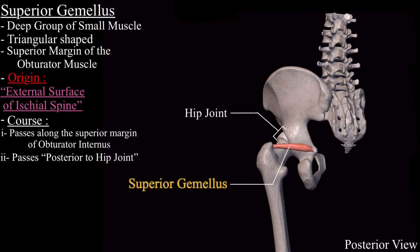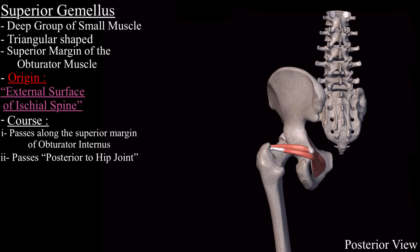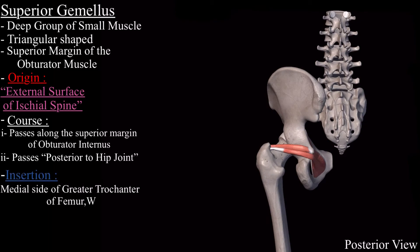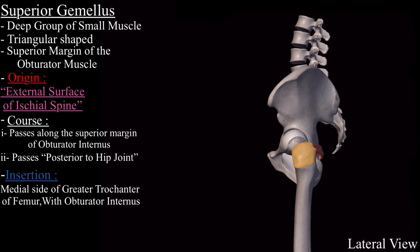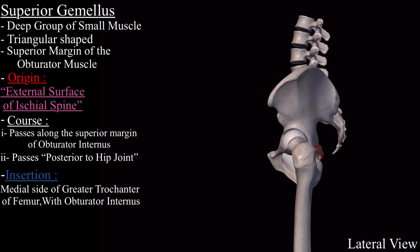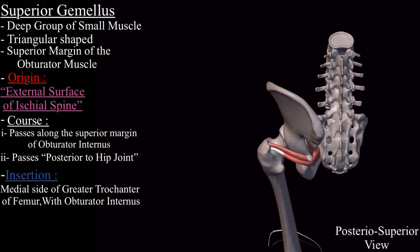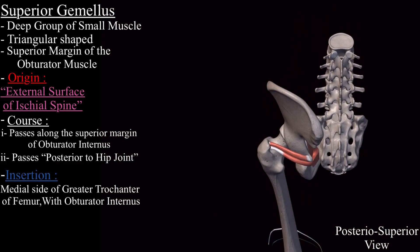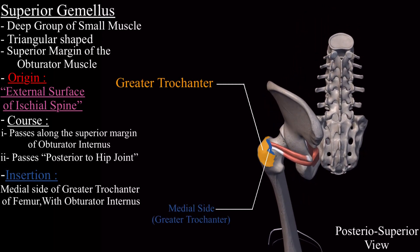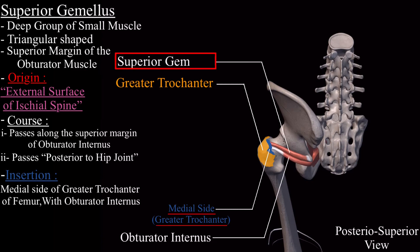The superior gemellus muscle then inserts on the medial side of the greater trochanter with the obturator internus muscle. This is the greater trochanter of the femur bone, and it is inserted on the medial side of the greater trochanter with the obturator internus muscle.